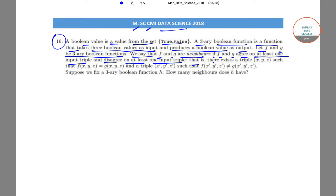That is, if there exists triple (x,y,z) such that f(x,y,z) equals g(x,y,z) and triple (x',y',z') such that f(x',y',z') is not equal to g(x',y',z').